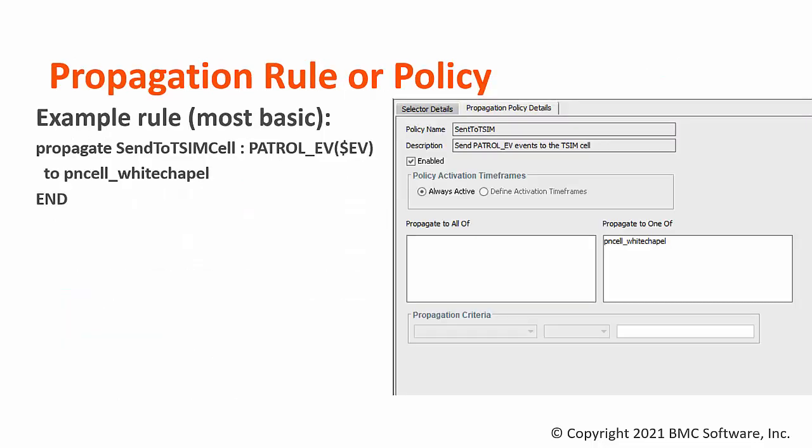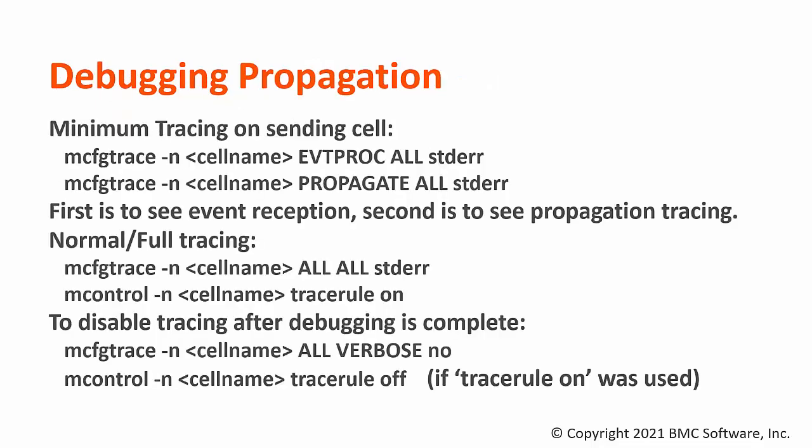As stated before, you must create a propagation rule or policy on your remote cell to make it propagate to the TSIM cell. Your requirements could be more complex than shown here; this page just shows a basic example of each. When enabling tracing for troubleshooting propagation, you can choose to enable the minimum tracing on your sending cell as shown here. The first entry for EVT proc tracing is to see event reception, and the second entry is to see propagate tracing.